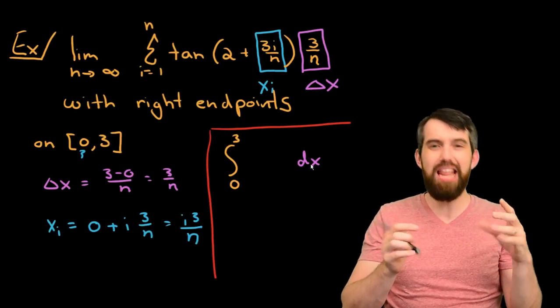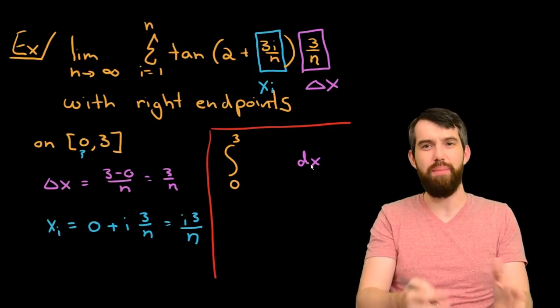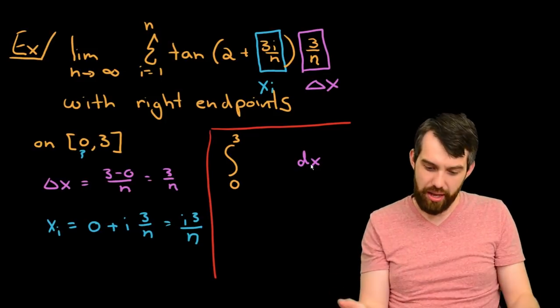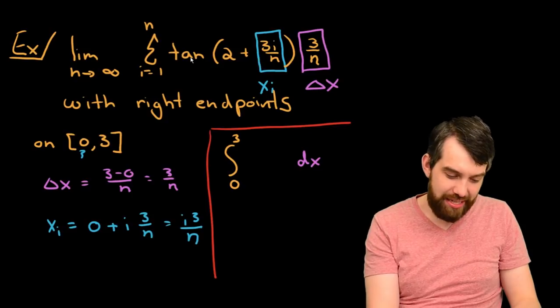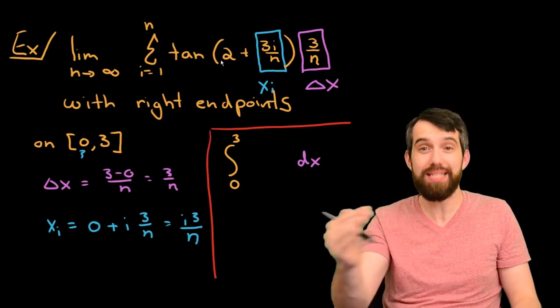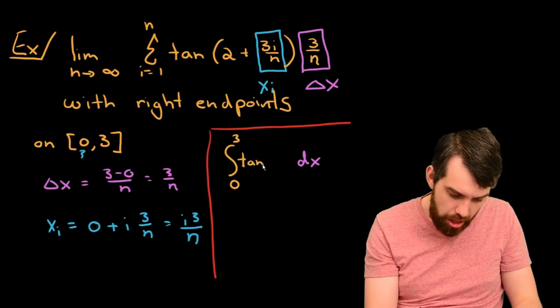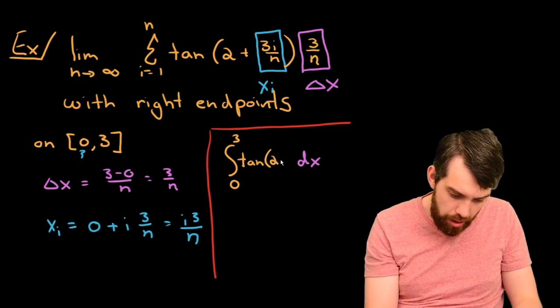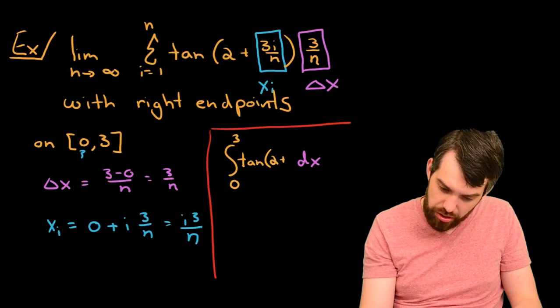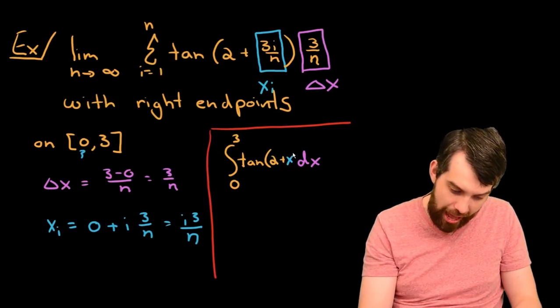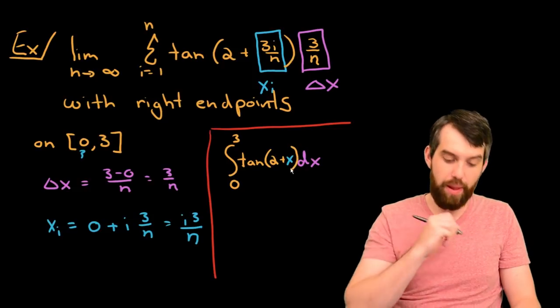Second thing that changes is that anywhere you've got an x_i in your sum, the x_i is going to transform just into x. So, I'm going to have this tangent of 2 plus x. So, the way I write this is I just say that this is the tangent of 2 plus this variable x, and all of that multiplied by dx.